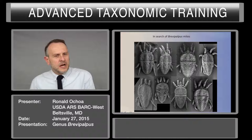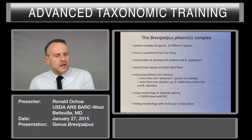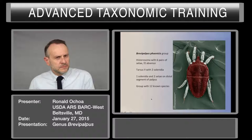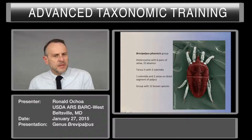All these mites that you see right now are called Brevipalpus phoenicis. However, they are not the same species — there are several. As I mentioned, they are around 12 different. Brevipalpus phoenicis sensu stricto has six pairs of setae, F2 is absent, tarsus 2 with two solenidia, one solenidia and two setae on the distal segment of the palpus. The one shown in red color is Brevipalpus phoenicis collected from palms from Netherlands.